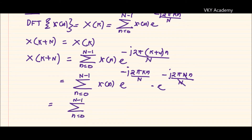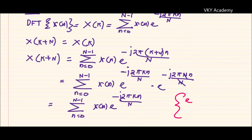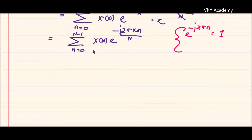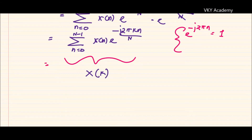So I am left with summation from n equals 0 to N minus 1 of x(n) times e to the power minus j two pi k n upon capital N, and e to the power minus j two pi n equals 1, because e to the power minus j times even multiples of pi is always equal to 1. So finally this DFT is capital X(K). Hence we prove that X(K + N) equals X(K).